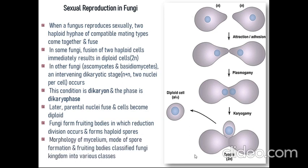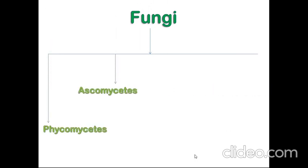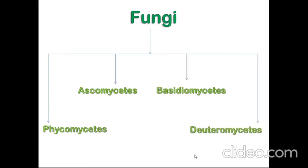The morphology of mycelium, mode of spore formation, and fruiting bodies classify the fungi kingdom into various classes. The fungi kingdom is subdivided into four different types: Phycomycetes, Ascomycetes, Basidiomycetes, and Deuteromycetes.